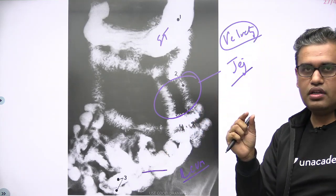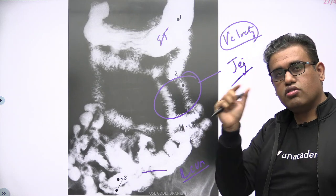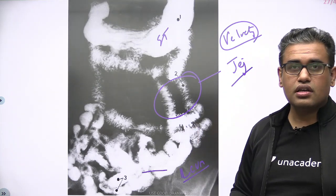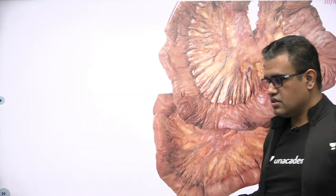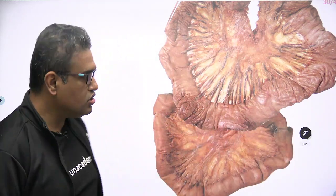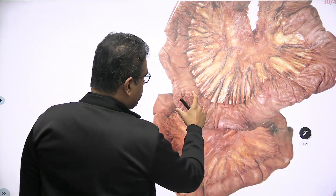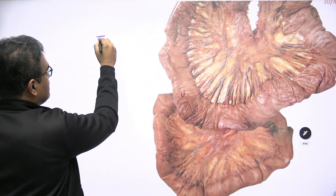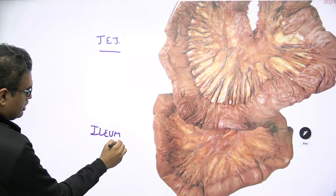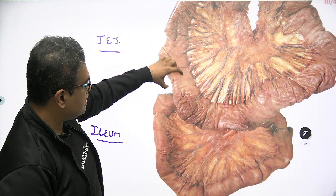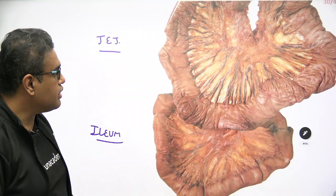This mucosal folding thickens the wall of the Jejunum compared to the Ileum. If you touch it in the OT during surgery, you can differentiate it better — the Jejunum wall is very thick compared to Ileum. Now looking at Jejunum and Ileum side by side, the Jejunum has a bigger, thicker wall and wider lumen compared to Ileum. The upper part shown is Jejunum, and the lower part of the gut shown is Ileum.